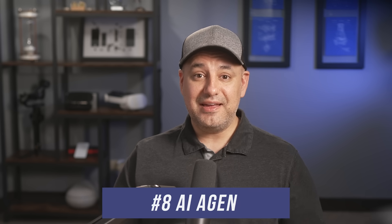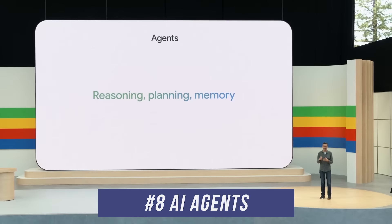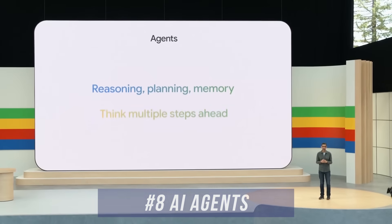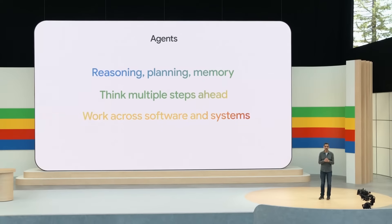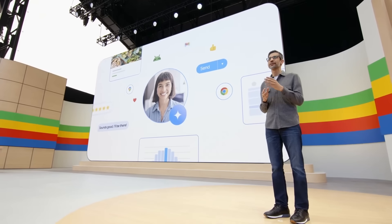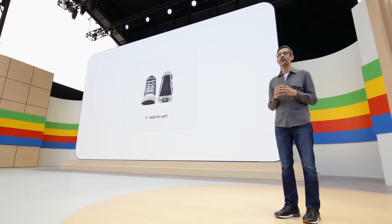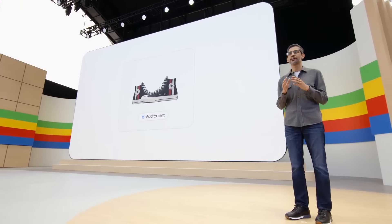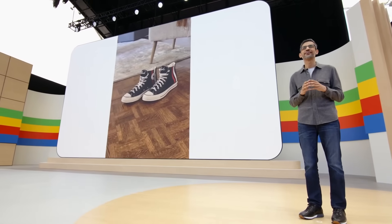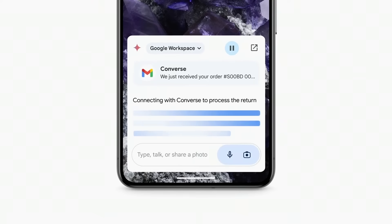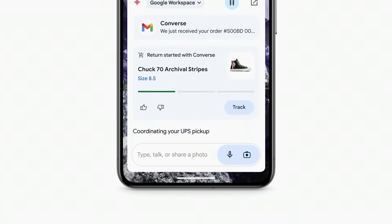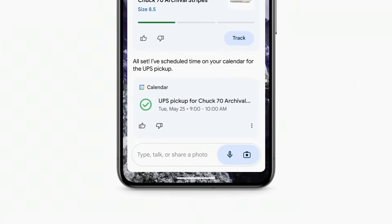Number eight is AI Agents. Google created AI agents that can reason, plan, and have memory. They can do multi-step processes and work ahead with other software and systems. In the demo, Gemini handles a shoe return entirely on its own — searching your inbox for the receipt, locating the order number, filling out a return form, and even scheduling a pickup.